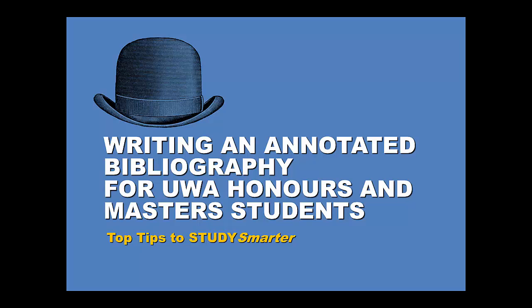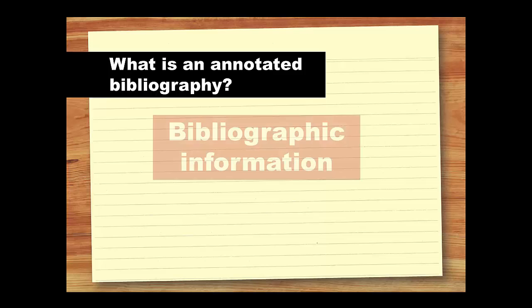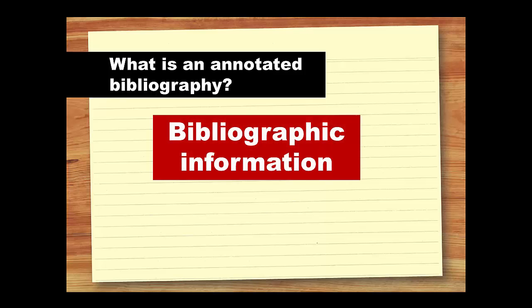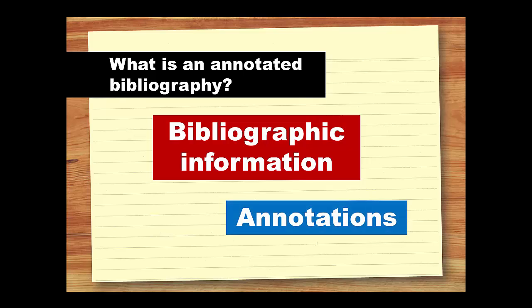An annotated bibliography has two parts. The bibliographic information, which includes the author's name, the date of publication, the titles of the article, journal or book, and the volume and page numbers, if applicable. And then you have the annotations, which are your summaries and evaluations and reflections on the main points of the chapter, book, or article you've read.